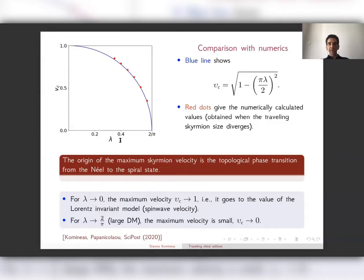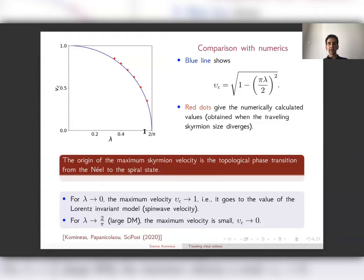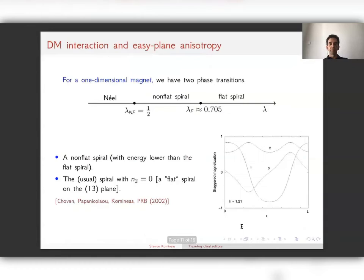Looking at the details of this diagram for applications: when DM is small, the maximum velocity is close to one (the spin wave velocity). But when DM is large and close to the critical value 2/π for the transition to the spiral state, the maximum attainable skyrmion velocity can be very small.